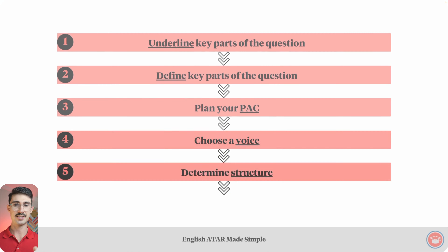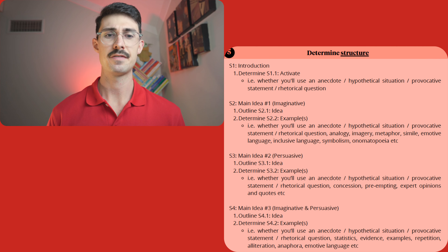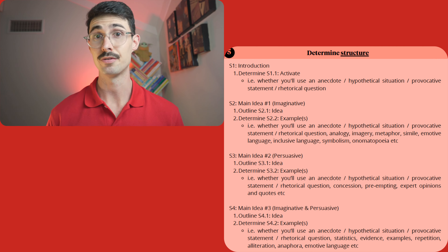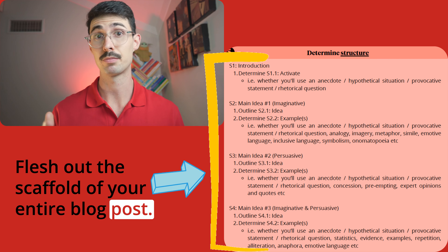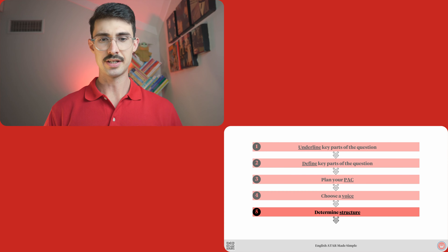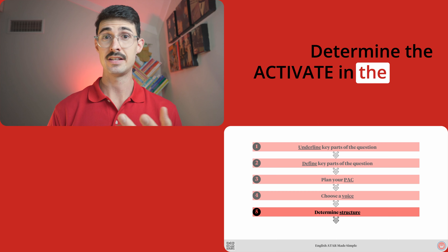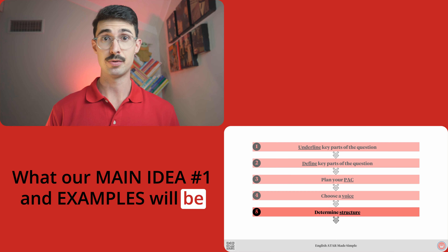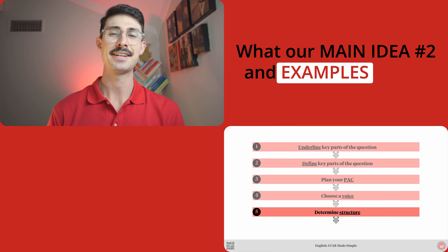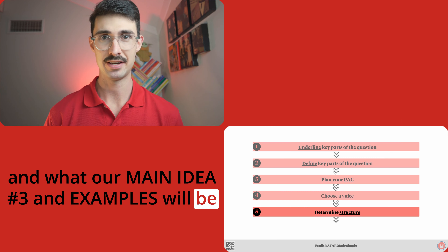Step number five is determine structure. You'll see in the PDF study notes that step number five is probably the most demanding step among all of them. It requires you to really flesh out the scaffold of your entire blog post. Essentially, determine structure requires us to determine the activate in the intro, what our first main idea and examples will be, what our second main idea and examples will be, and what our third main idea and examples will be.